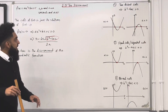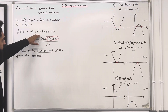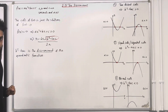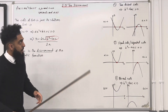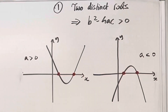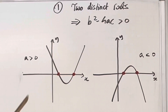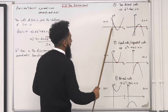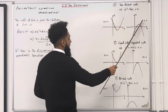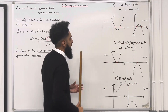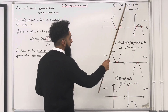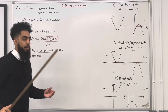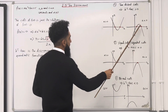We know that the quadratic formula is the solution to the quadratic equation. We have three scenarios. Scenario number one: two distinct roots. When you see that in the exam, two distinct roots implies that the discriminant has to be greater than 0. Graphically, because the discriminant is greater than 0, we will have two x-intercepts, as you can see over here.